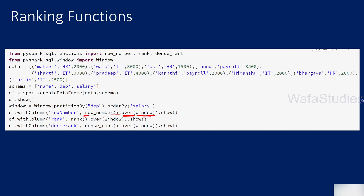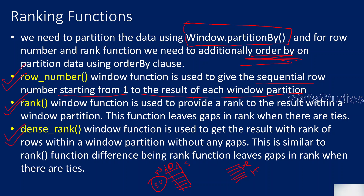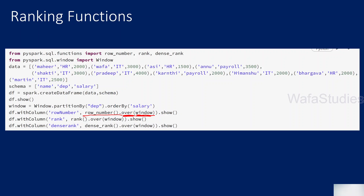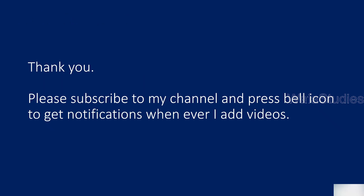So let's go back to the presentation. That is what I have written here also: rank is a window function used to provide rank to the results within the window, but this function leaves gaps in the rank when there is a tie. Whereas dense_rank does the same thing but does not leave any gap. I hope you got an idea of how rank, row_number, and dense_rank functions work and also the difference between them. Thank you for watching. Please subscribe to my channel and press the bell icon to get notifications whenever I add videos. Thank you so much.